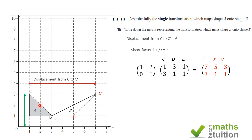So object A has been transformed by shear with shear factor 2, x-axis invariant. For the next video I'll show you how to find the invariant line. Please subscribe so I can let you know when that video is ready. I hope all of this makes sense — thank you for watching.